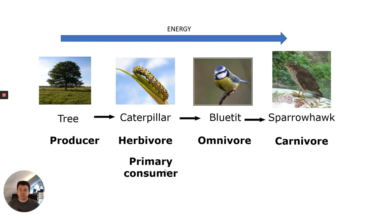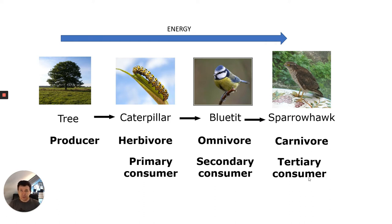The first level is the producer, then you have the primary consumer — the first organism that consumes the producer, in this case the caterpillar, and it's always a herbivore. Then you have the secondary consumer, which is the blue tit. The carnivore is known as a tertiary consumer or even an apex predator. This is a simplified food chain — in reality there are lots of different species feeding off the tree, so many different herbivores and therefore many different carnivores or omnivores.